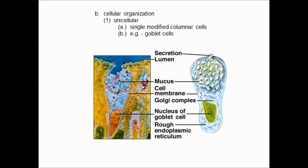The doctor directs their product to a specific site. For example, the exocrine pancreas secretes into the duodenum, and the sweat glands secrete onto the surface of our skin.